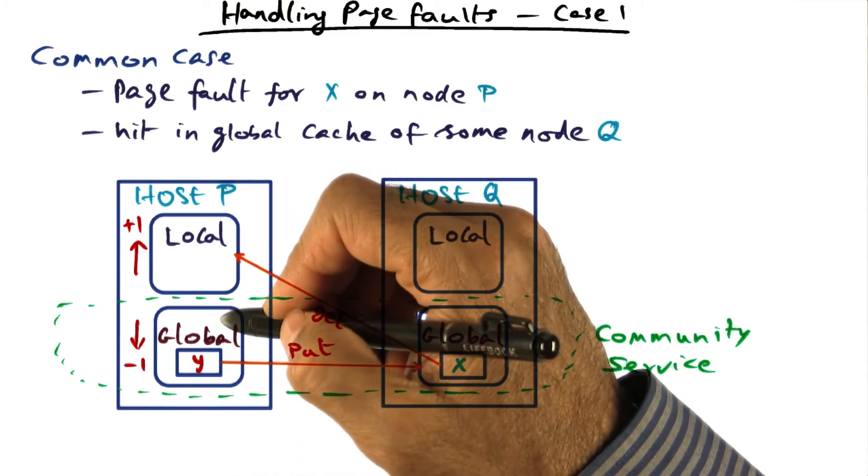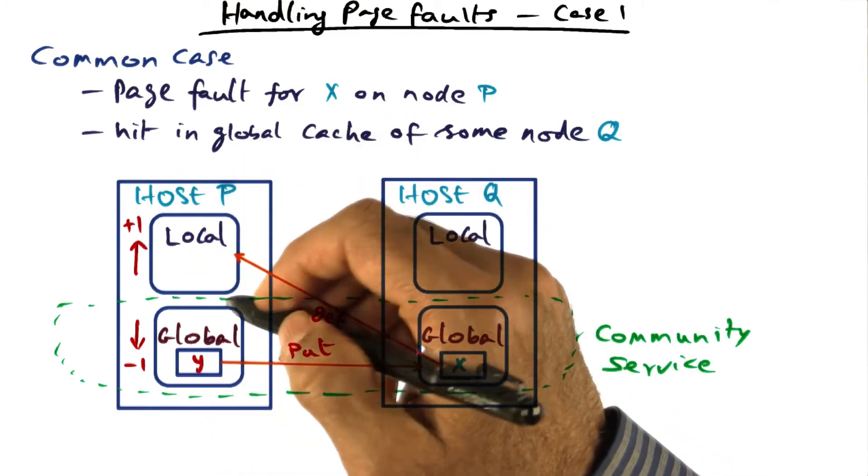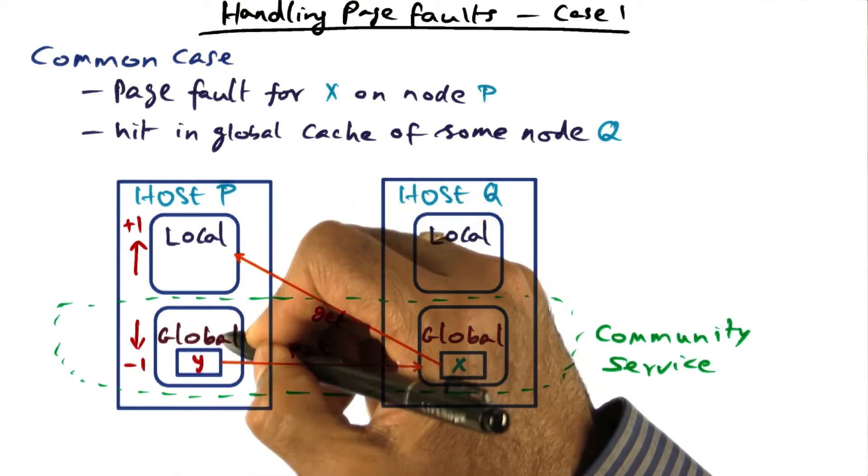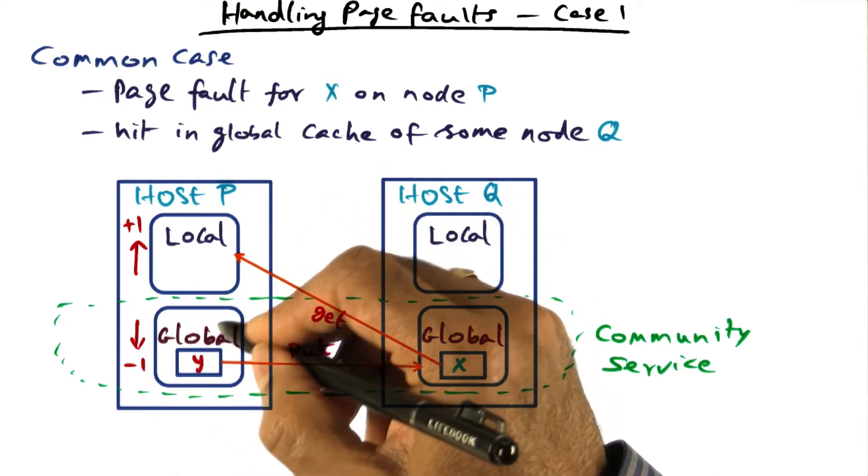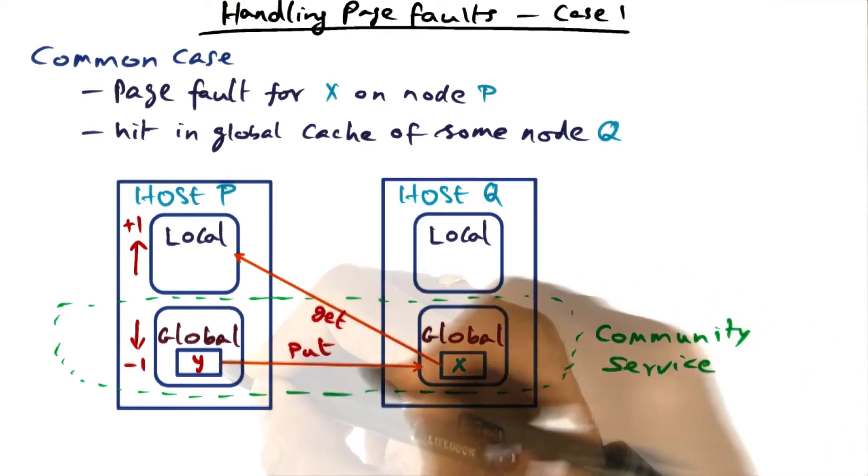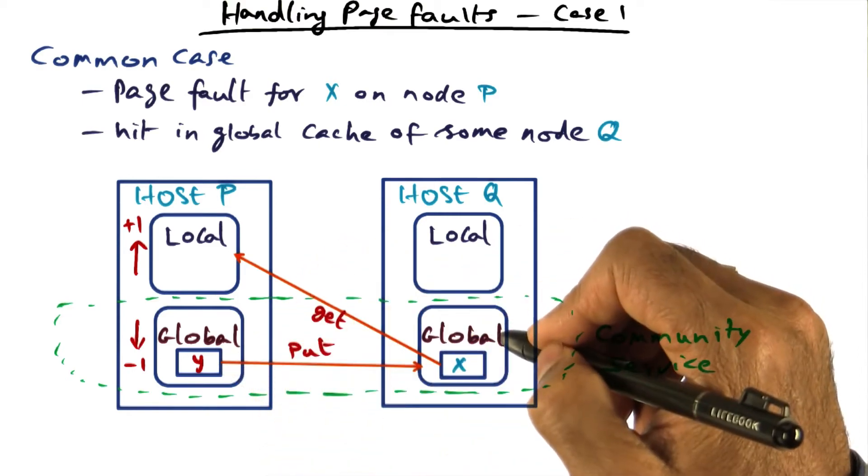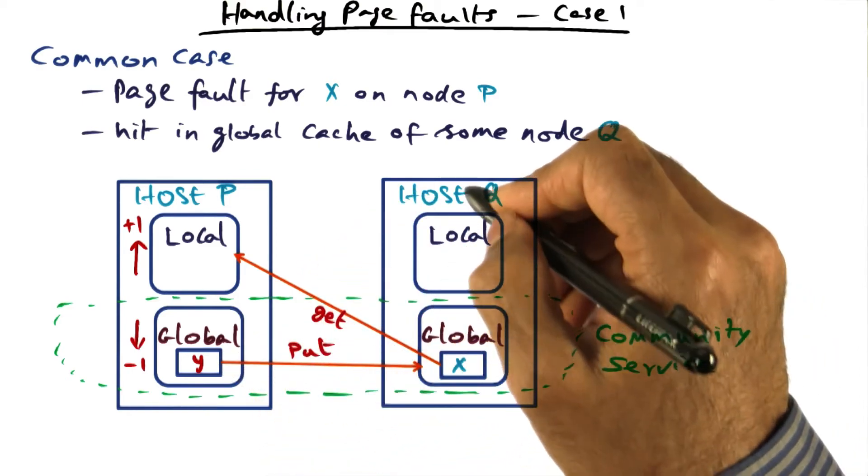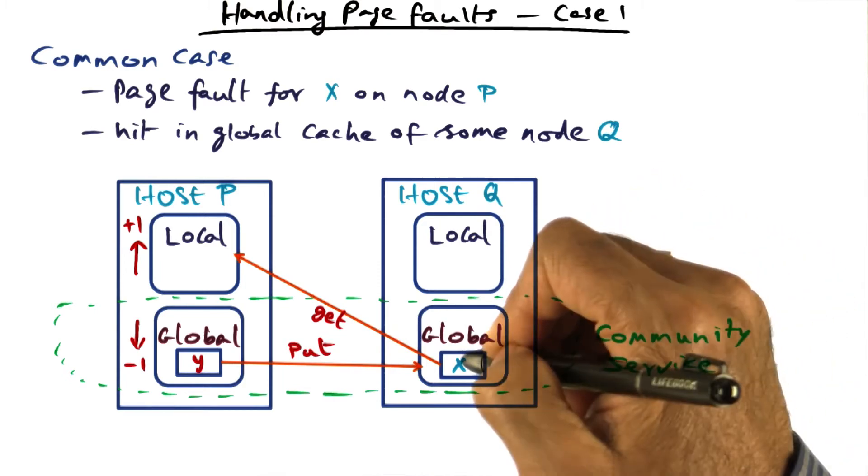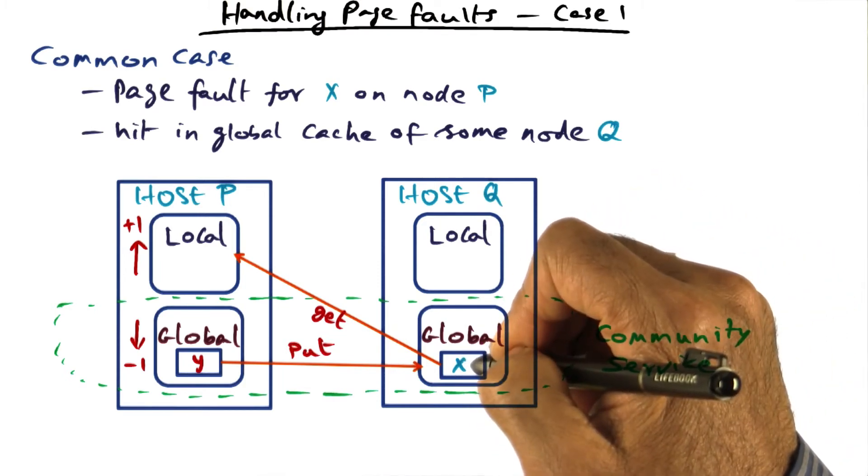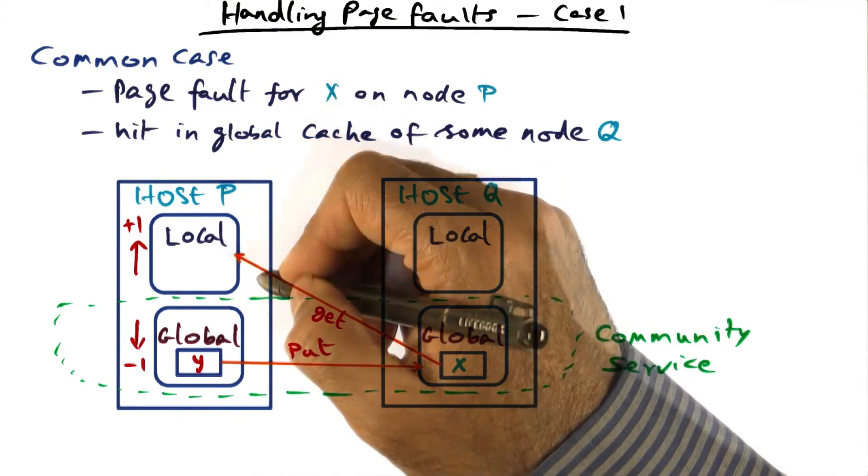But it cannot go up by one without getting rid of something from here because the sum of the local and global is the total amount of physical memory available at this node. And therefore, what P is going to do is pick the oldest page that's available in the global part and send it over to node Q. So in other words, what we are doing so far as host Q is concerned is saying, well, X happens to be currently in the working set. Let me send it to host P.